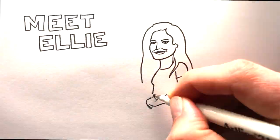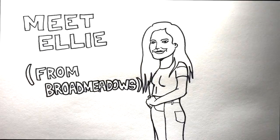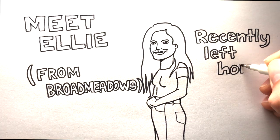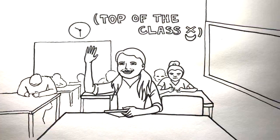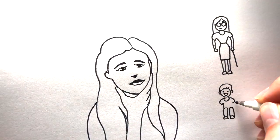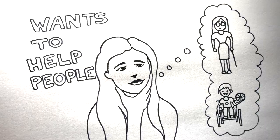Meet Ellie. Ellie comes from Broadmeadows in Melbourne's north and has recently left home, which has been unstable for the last couple of years. She hasn't had a job before, but she was the top of her class in high school. She's interested in helping people but really wants to explore before she commits.